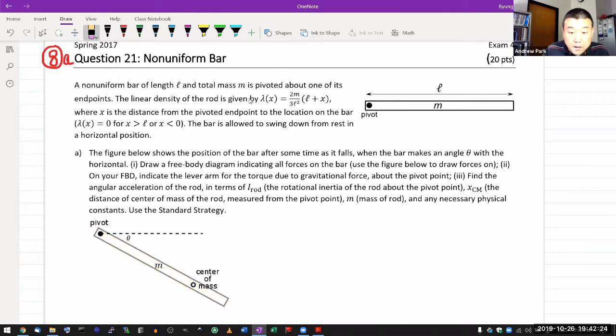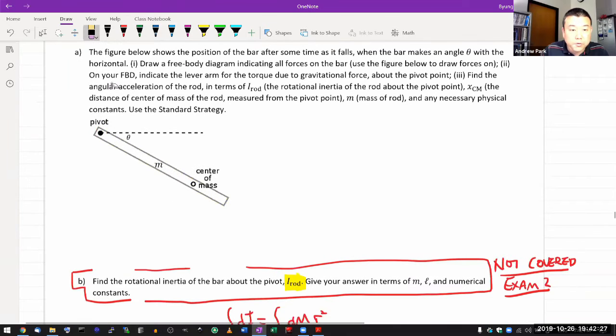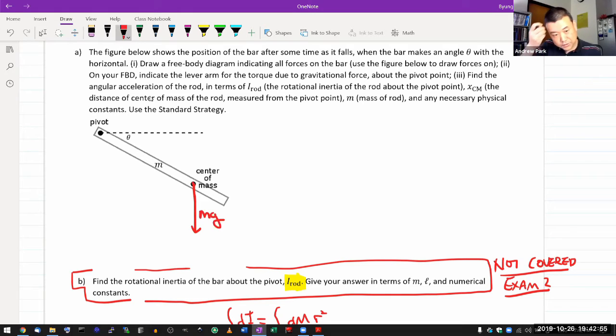The bar is allowed to swing down from rest. The figure below shows the position of the bar after some time as it falls, when the bar makes an angle theta with the horizontal. It says, draw a free body diagram indicating all forces on the bar. Use the figure to draw forces on the bar. So let's just start by drawing the forces.